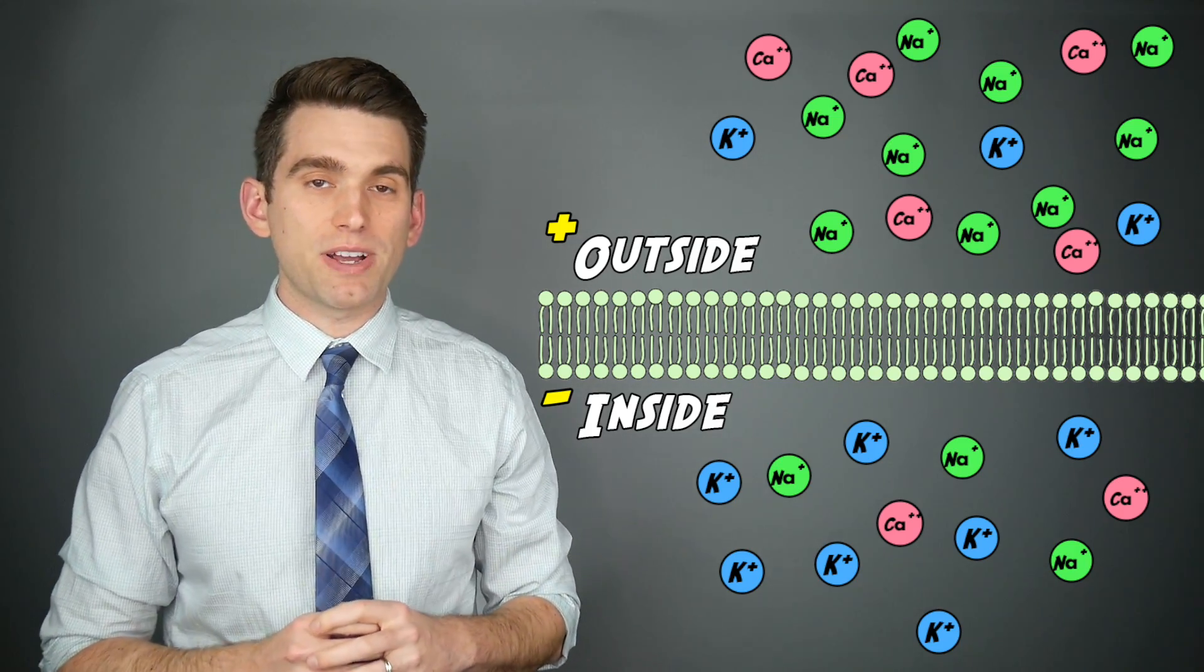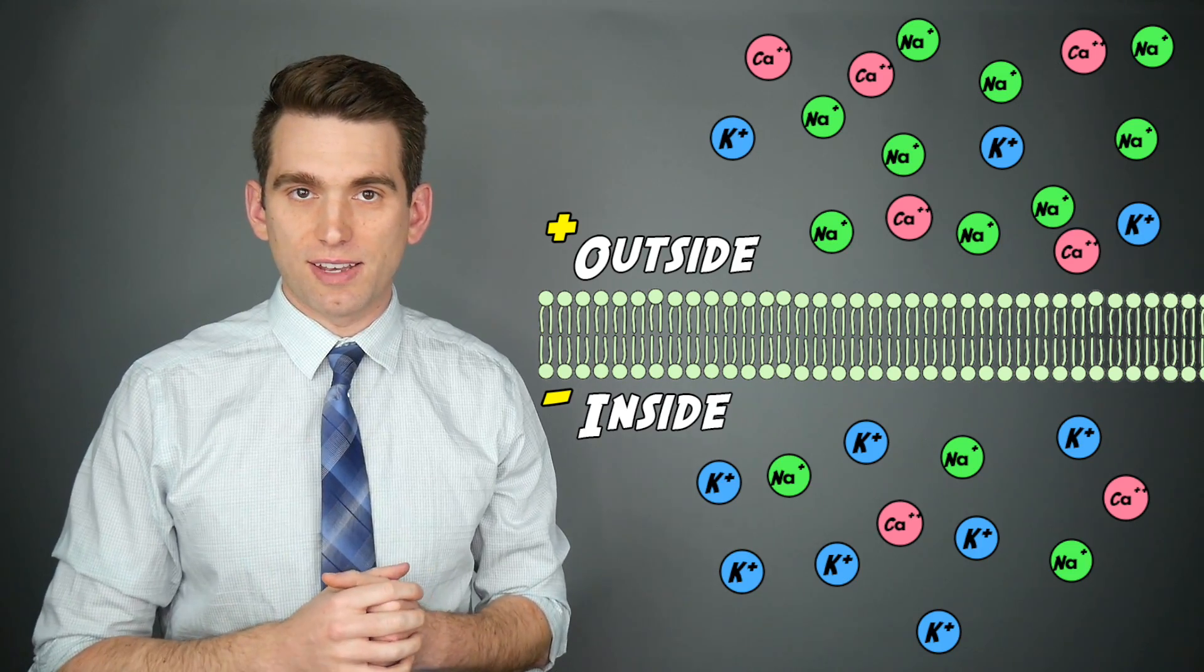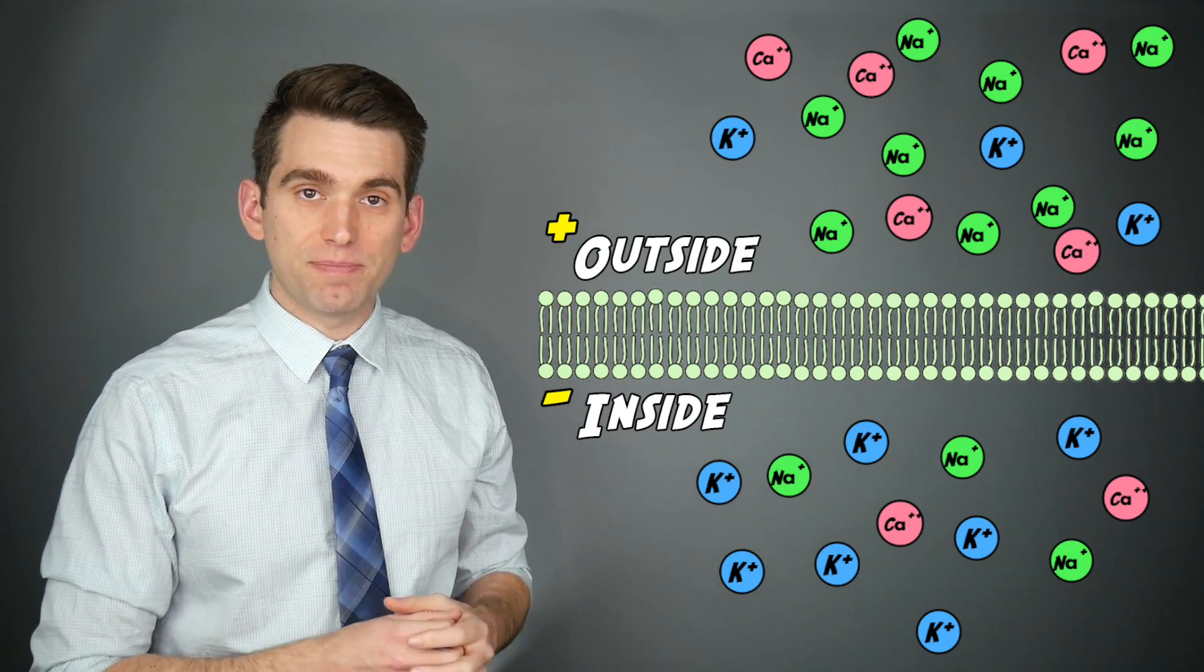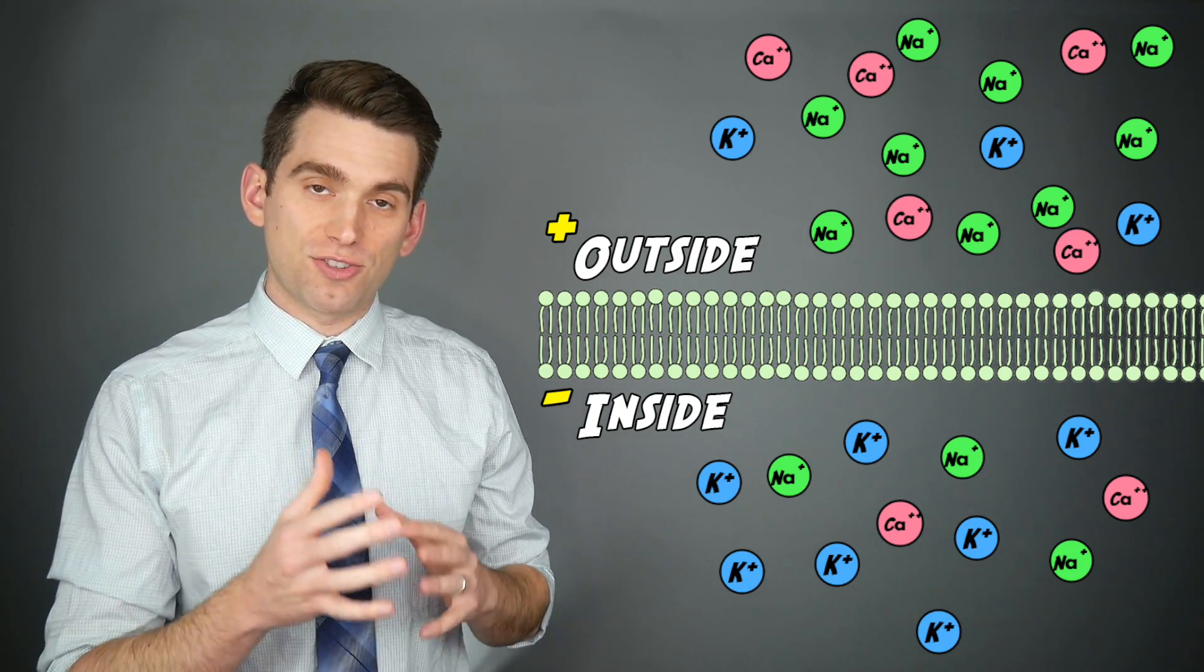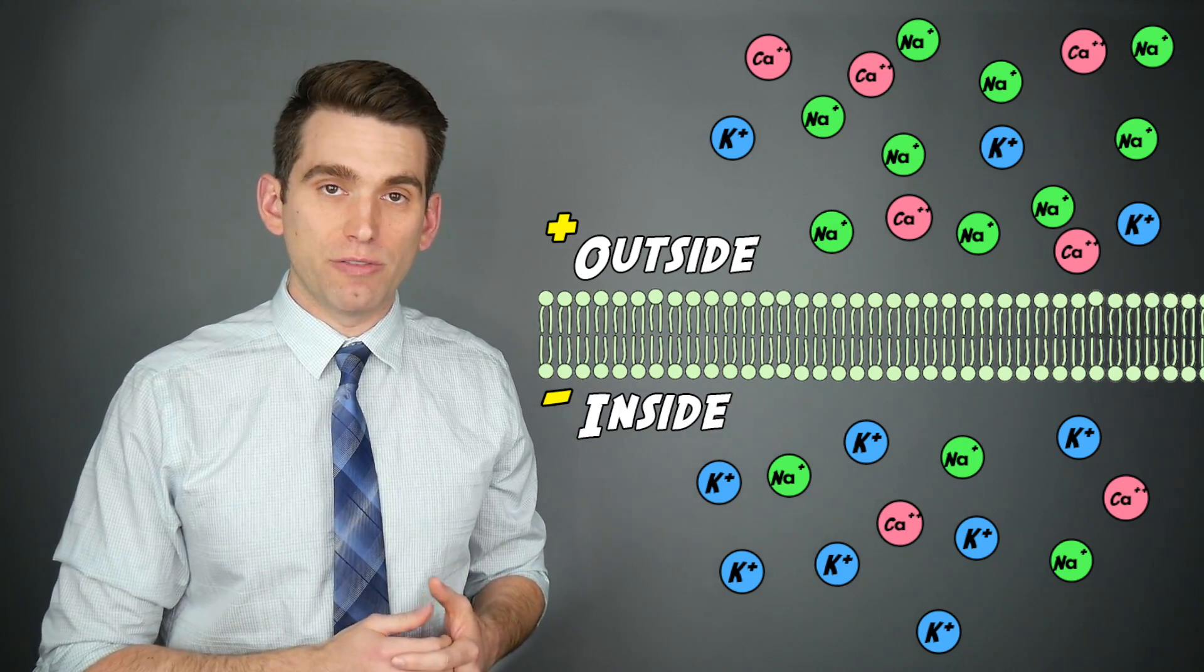For a heart cell, this resting potential is around negative 90 millivolts. There's a high buildup of sodium outside the cell, potassium buildup inside of it, we also have chloride and calcium ions distributed, and it's this distribution that gives a resulting potential of around this minus 90 millivolts.